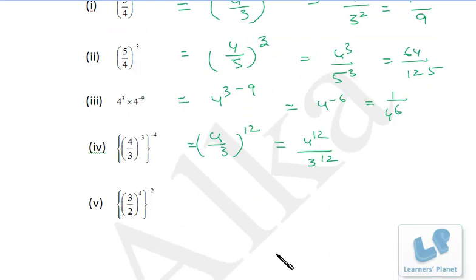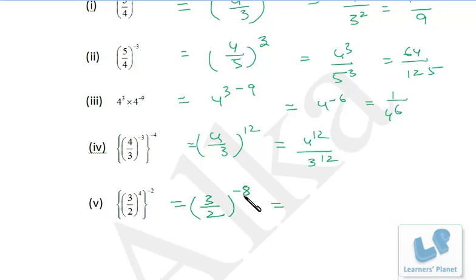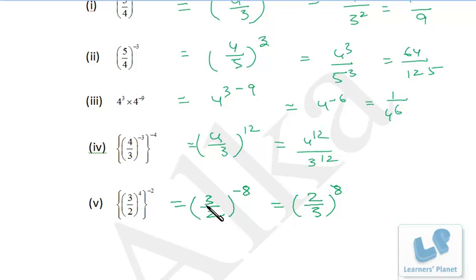Similarly, this problem: it's 3 by 2 raised to 4 into minus 2, that is minus 8. To convert the exponent to positive, take the reciprocal of the number inside the bracket. So it's 2 by 3 raised to 8. Friends, it's very simple — just practice 8 to 10 sums. Print the worksheet and do the problems; you'll gain confidence very quickly and easily.